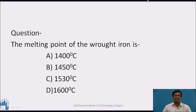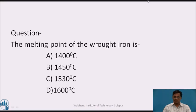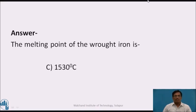Pause this video and answer this question. The melting point of wrought iron is: A) 1400 degrees Celsius, B) 1450 degrees Celsius, C) 1530 degrees Celsius, D) 1600 degrees Celsius. The answer for this question is C, that is 1530 degrees Celsius.